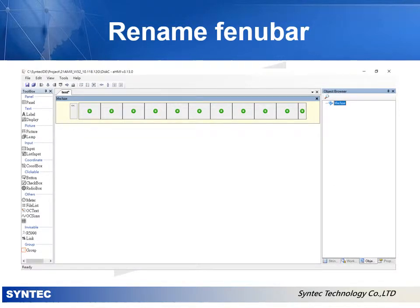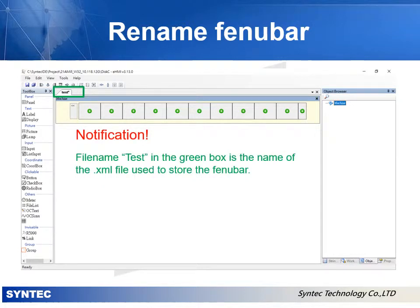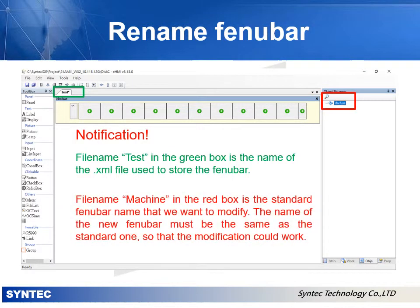Notification: File Name "Test" in the green box is the name of the .xml file used to store the Fenubar. File Name "Machine" in the red box is the standard Fenubar name that we want to modify. The name of the new Fenubar must be the same as the standard one so that the modification could work.